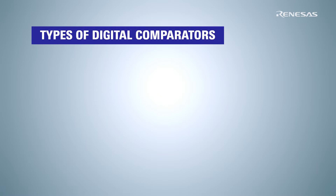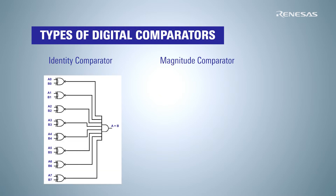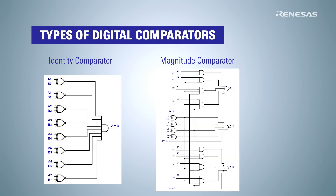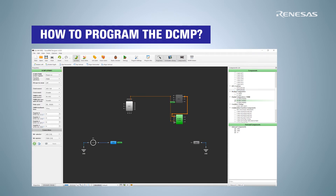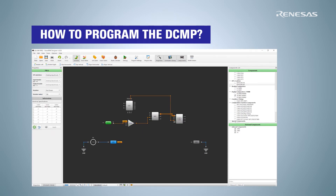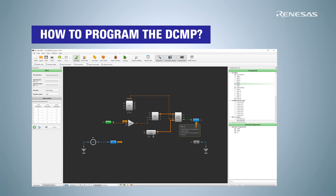Digital comparators can be of two types: identity comparators and magnitude comparators. Identity comparators have only one output. Magnitude comparators, on the other side, have three output terminals for each of the possible results. The fourth family of Green Pack ICs are equipped with three digital comparators, which can be easily programmed in the Green Pack Designer software to work as magnitude comparators.